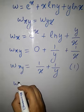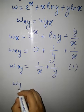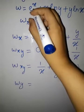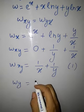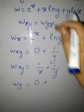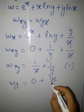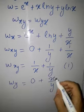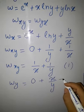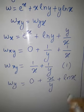Now let us find the partial derivative of w with respect to y. The derivative of e^x with respect to y is 0, plus the derivative of x·ln(y) with respect to y is x/y, plus the derivative of y·ln(x) with respect to y is ln(x).